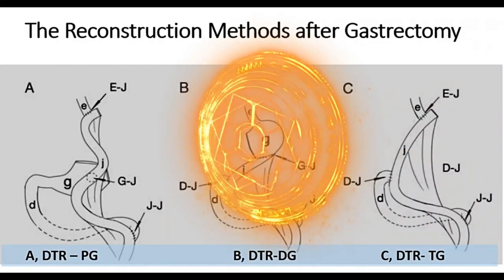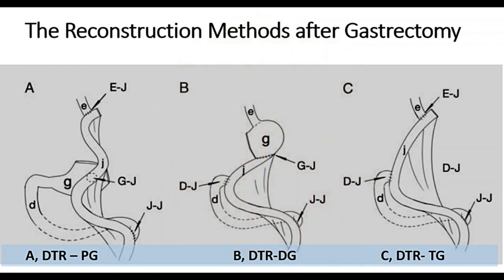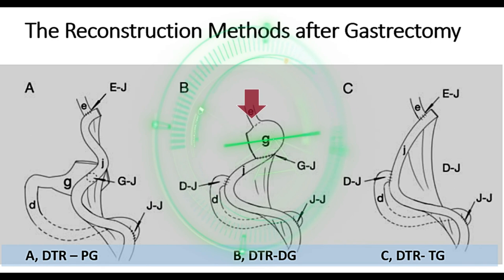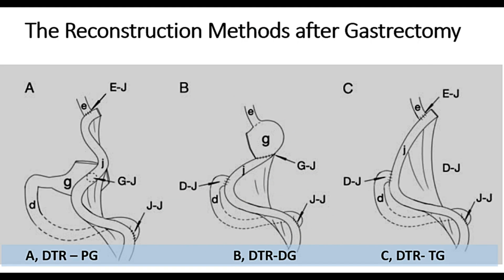The main reconstruction methods after gastrectomy are: in Fig A, double-track reconstruction after proximal gastrectomy — we bring a loop of jejunum in a Roux-en-Y manner to esophagogastrostomy, gastrojejunostomy, and gastrojejunostomy. In Fig B, after distal gastrectomy, double-track reconstruction involves gastrojejunostomy, duodenojejunostomy, and duodenojejunostomy. In Fig C, after total gastrectomy, double-track reconstruction is in the form of esophagojejunostomy, duodenojejunostomy, and duodenojejunostomy.